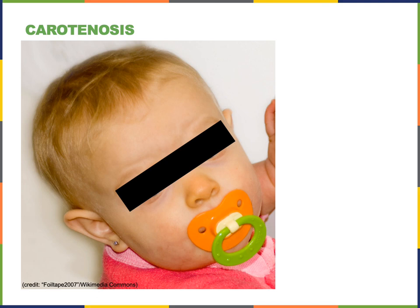Carotene is a pigment with an orange color that comes from vegetables. Beta-carotene is a precursor to vitamin A that gives the orange color to carrots. As we consume vegetables containing carotene, it contributes to the color of our skin, giving an orange pigment. However, consuming a large amount of carotene can lead to an excessive orange coloration of the skin known as carotenosis, as shown in this image of an infant with carotenosis from excessive consumption of carrots.